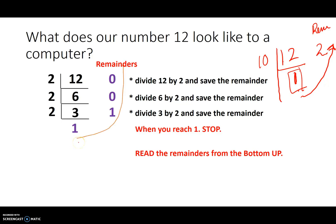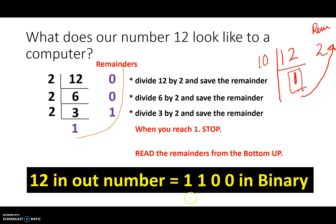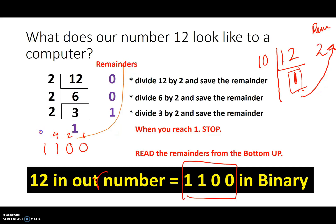Reading the remainders backwards gives us 1, 1, 0, 0. So 12 in our number system is represented as 1100 in binary. How do we verify this? Let's write down 1100 and its weights: 1, 2, 4, 8. The weights are 8 plus 4 equals 12. That's how our number 12 gets represented to a computer as a string of binary bits.